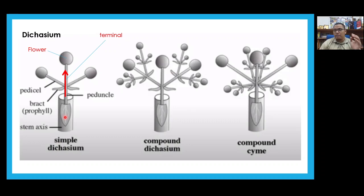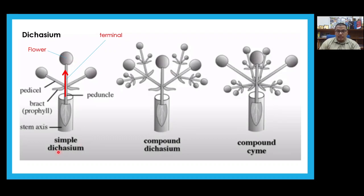In inflorescences, this reproductive structure, we call those leaves bracts. A bract is a leaf or leaf-like organ that occurs in an inflorescence. The terminal stem comes up and ends in a flower. This type of branching is called a dichasium. 'Di' means two, so at each node you have two bracts, and an axis comes up ending in a flower.